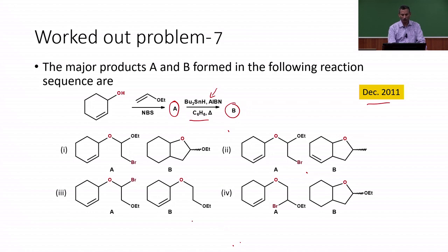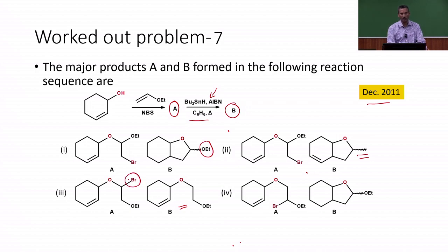Looking at the second intermediates, three of them are cyclic derivatives and one has the ethoxy unit present in a cyclic ether. In one product the ethoxy unit is lost, and in the third one we do not have a cyclic product — the bromine atom is completely lost, so debromination actually happened. In the fourth one, the ethoxy derivative is still present. So we have four different combinations of first intermediate and second product given.